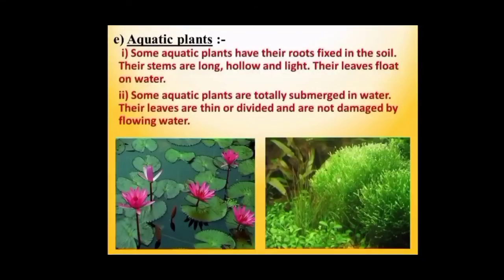Aquatic plants like lotus and water hyacinth have their roots fixed in the soil. Their stems are very strong, hollow and light, and their leaves float on water. Some aquatic plants are totally submerged in water; their leaves are thin or divided and are not at all damaged by the flow of water. In the two pictures, you can see beautiful lotus and big waxy-coated leaves.